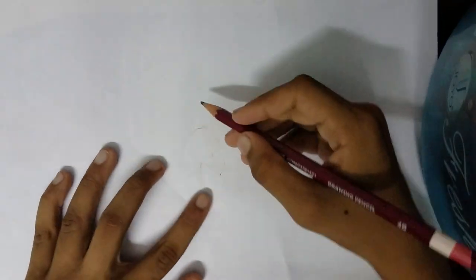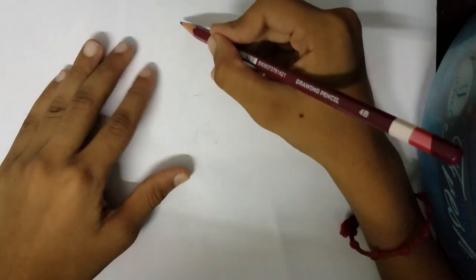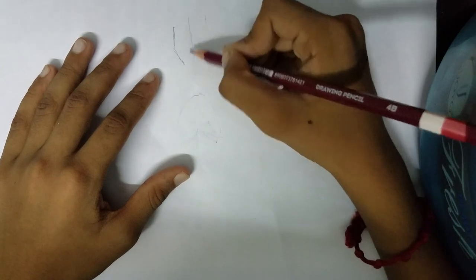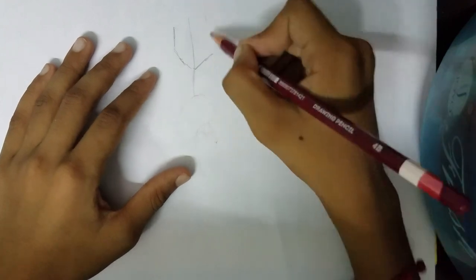So now for the shape, something like this. Then draw a line like this. Now something like this, come up.